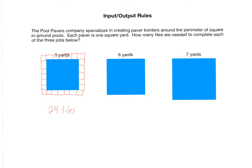You should now pause this screencast and do the same thing with a square pool of side length six yards and a square pool of side length seven yards. Once you've done this, you'll see that a five-yard pool needs 24 tiles, a six-yard pool needs 28 tiles, and a seven-yard pool needs 32 tiles. There is some sort of relationship between the size of the pool and the number of tiles needed.